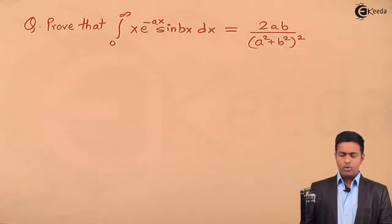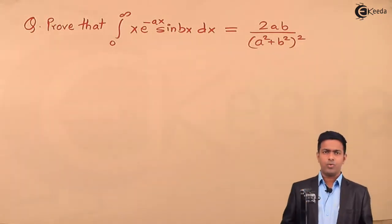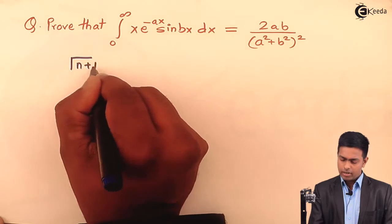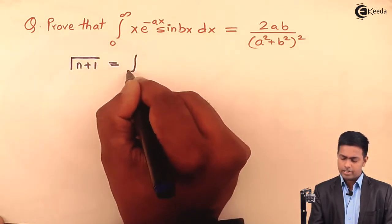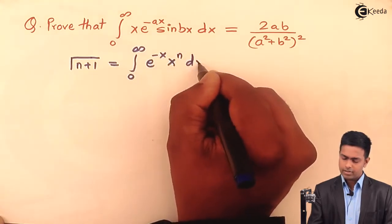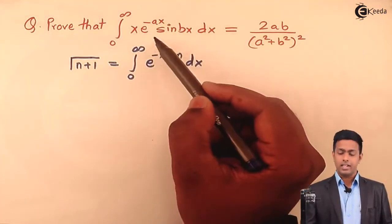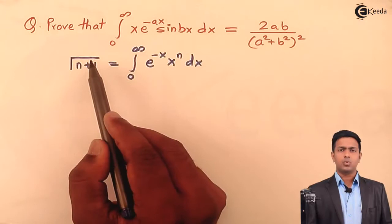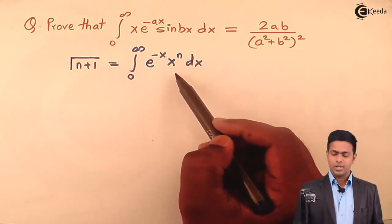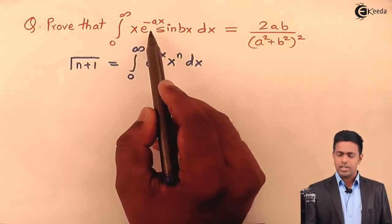The definition of the gamma function is: gamma(n+1) is equal to integration from 0 to infinity of e raised to minus x times x raised to n dx. If we bring this form into the above integration, then we can say it is equivalent to gamma(n+1). For that we want one exponential term and the other term must be algebraic. In our case we have three terms: one algebraic, one exponential, and one trigonometric.